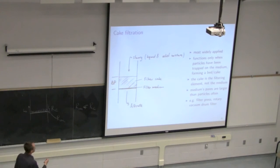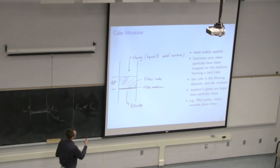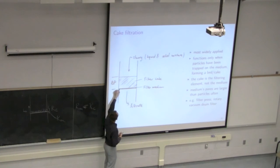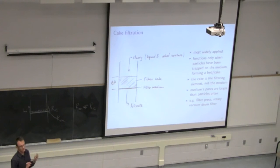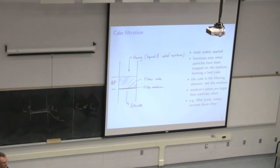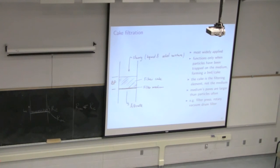Once the cake starts to build up, future slurry that comes through meets the cake first and is held back by it. The medium is only there to create that initial layer; after that it plays no significant role in terms of pressures. The cake is made up of the slurry solids that remain above the medium. There will be moisture trapped in the cake — it's not a dry cake. This principle of cake filtration applies to all common unit operations: the filter press, the rotary vacuum drum filter.